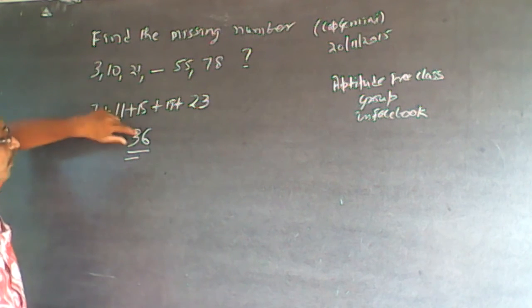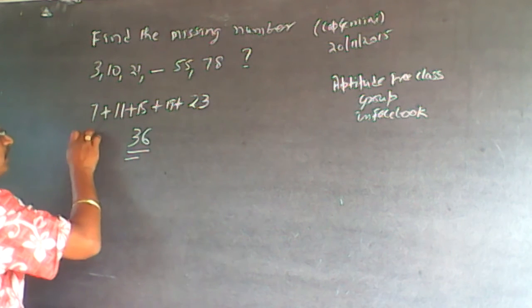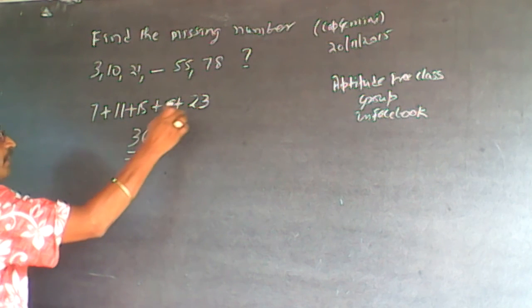Then I add plus 15, it will become 36. And then when I add plus 19, from 36 it will become 55, plus 23. So this is the pattern: plus 7, plus 11, plus 15, plus 19, plus 23.